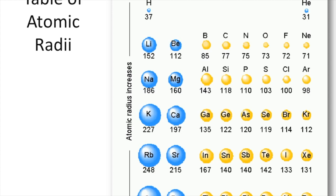Going from left to right across a row, every time you move to the right you get another proton in the nucleus. That extra proton pulls the shell of electrons closer, so every time you get another proton, it pulls that shell in tighter and tighter. That's why the atom itself gets smaller as you go across a row.